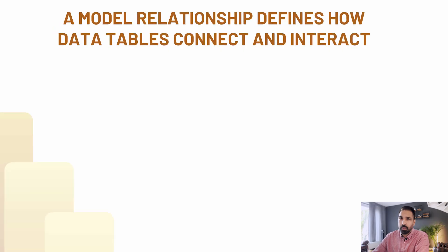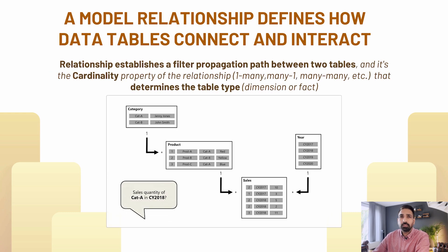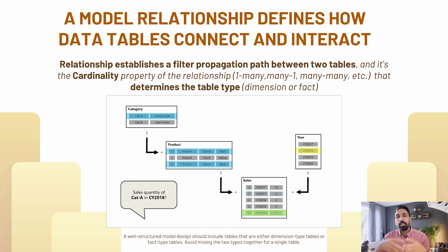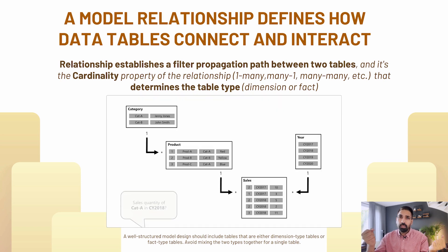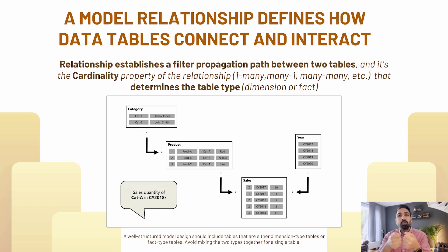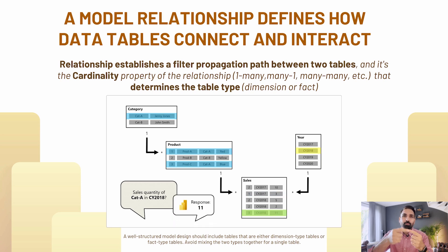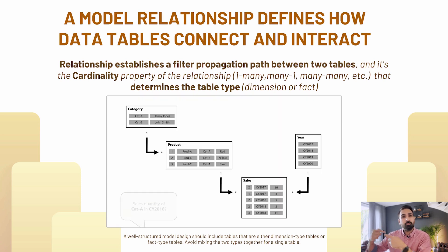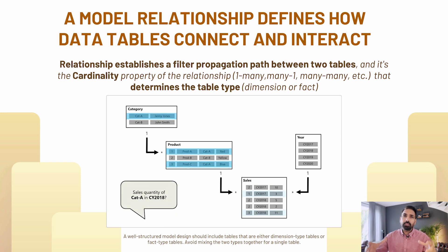Relationships in data modeling are a way to connect tables with each other, which also determines how we get data from relevant tables. For example, you have a sales table and a product table. You want to filter the product dimension table and get the relevant sales amount or quantity from the fact table. To do that, you apply a filter on the product table, which then filters out your fact table where all quantities and amounts are stored. Tables are connected through a relationship.